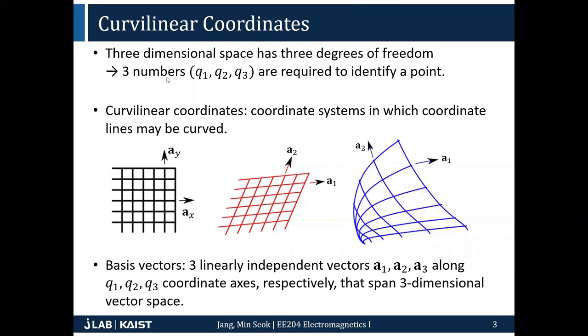In three-dimensional space, you need of course three numbers to identify a point - Q1, Q2, Q3. And then curvilinear coordinates means coordinate systems in which coordinate lines may be curved. These curved coordinate systems are called curvilinear coordinates.